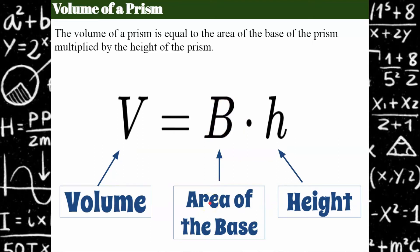The base of the prism determines what type of prism it is. So you could have a triangular prism, a square prism, a rectangular prism, or an octagonal prism, and you need the area of the base and you multiply it by its height.